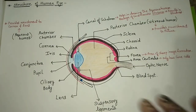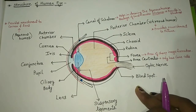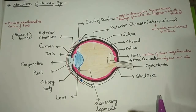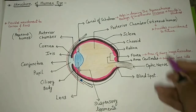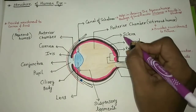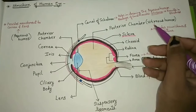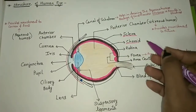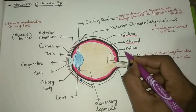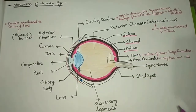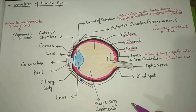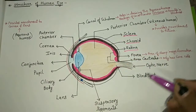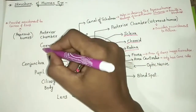We have discussed the structure of the eye in short — let's revise it. The structure of the eye shows three layers: the outermost layer is the sclera, the middle layer is the choroid, and the innermost layer is the retina. The outermost sclera layer is itself made up of two parts: the sclera and the cornea.